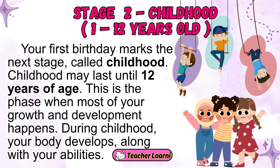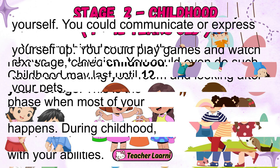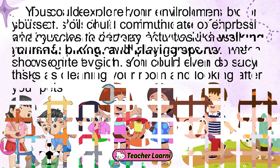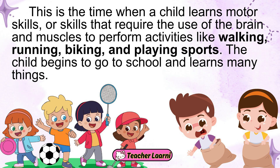Stage 2: Childhood, 1 to 12 years old. Your first birthday marks the next stage, called childhood, which may last until 12 years of age. This is the phase when most of your growth and development happens. During childhood, your body develops along with your abilities. You could explore your environment, communicate, dress yourself, play games, and do tasks like cleaning your room and looking after your pets. This is also when a child learns motor skills — skills requiring the brain and muscles for activities like walking, running, biking, and playing sports — and begins going to school.